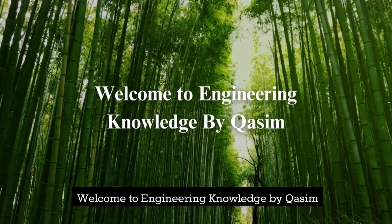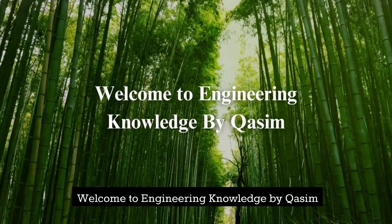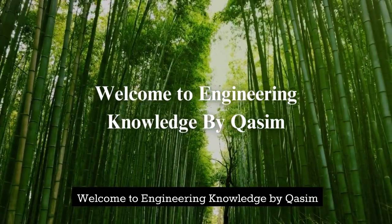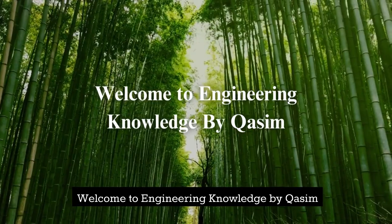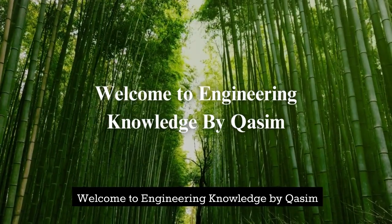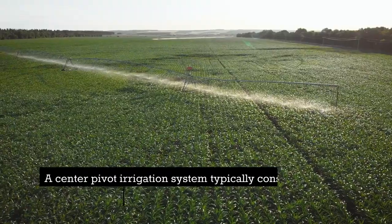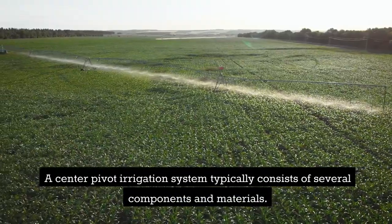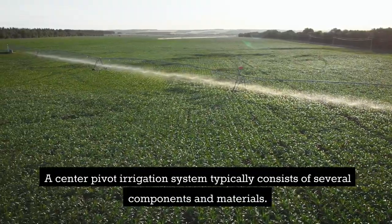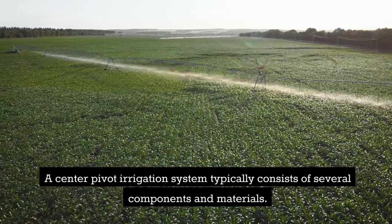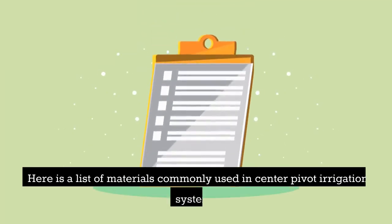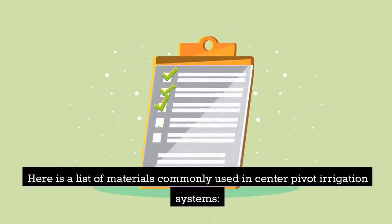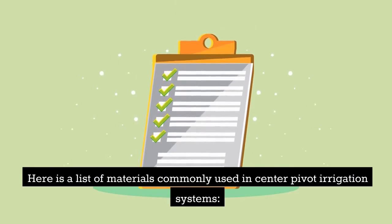Welcome to Engineering Knowledge by Kassam. A center pivot irrigation system typically consists of several components and materials. Here is a list of materials commonly used in center pivot irrigation systems.